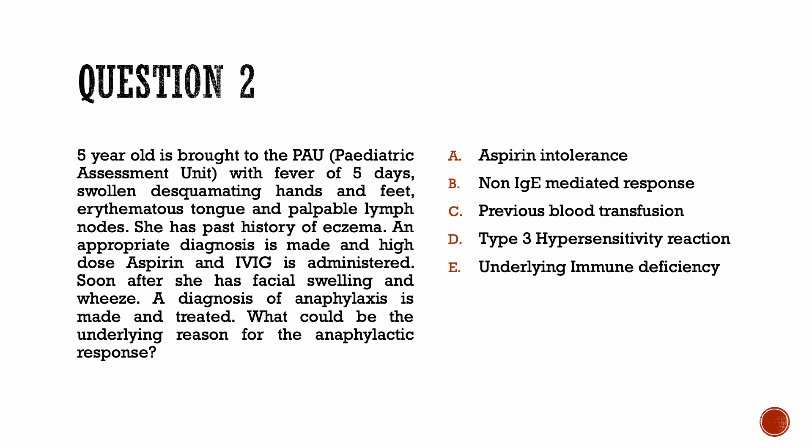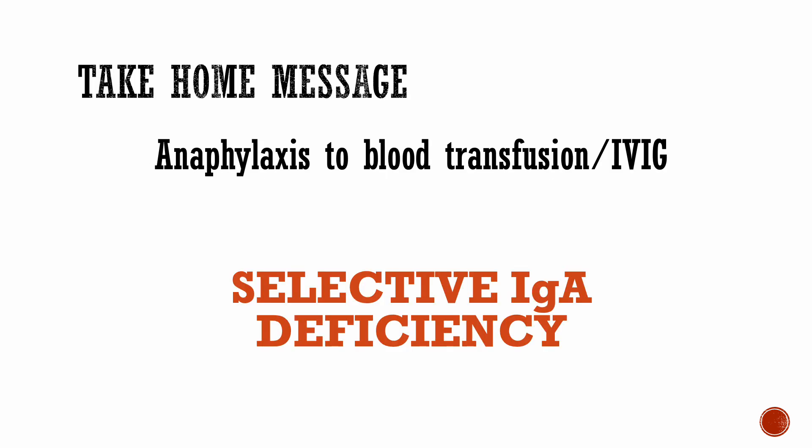This can be framed in many ways — a patient with a dog bite or tetanus receiving immunoglobulin who then develops anaphylaxis. The take-home message: anaphylaxis to blood transfusion or IVIG is selective IgA deficiency.